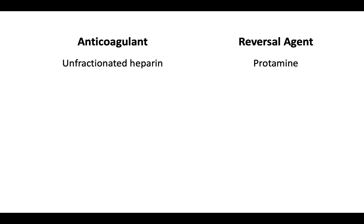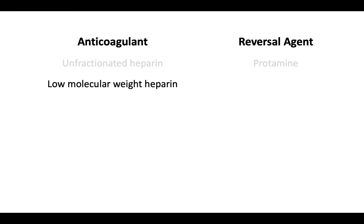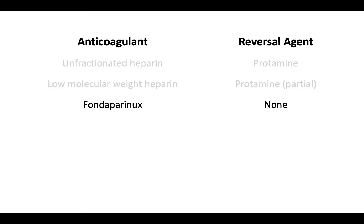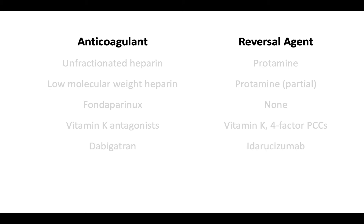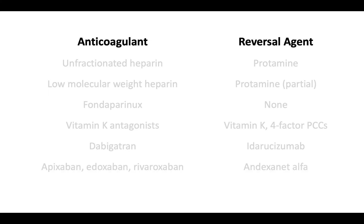Let's look at each anticoagulant and discuss its reversal agent. Unfractionated heparin is reversed by protamine. Low molecular weight heparins are partially reversed by protamine. Fondaparinux has no reversal agent. Vitamin K antagonists are reversed with vitamin K and four-factor prothrombin complex concentrates. Dabigatran can be reversed with idarucizumab. The oral direct factor Xa inhibitors — apixaban, edoxaban, and rivaroxaban — can be reversed with andexanet-alpha. The parenteral direct thrombin inhibitors argatroban and bivalirudin have no known reversal agents.